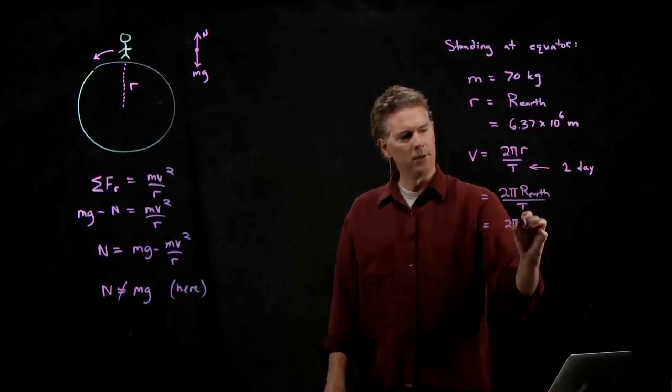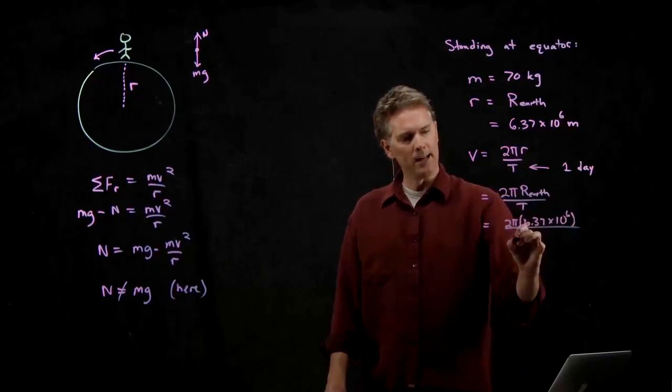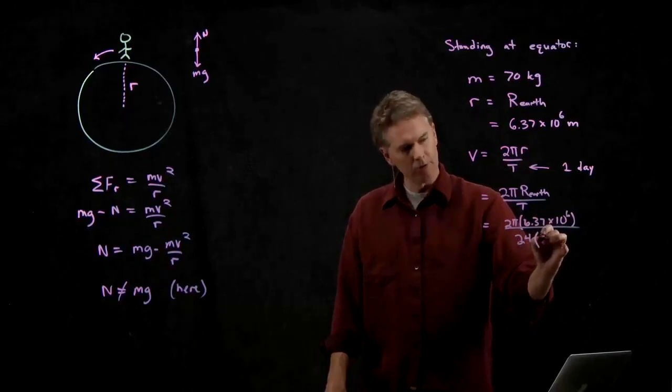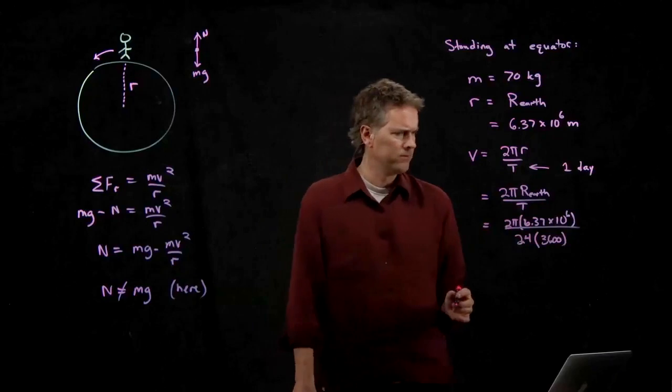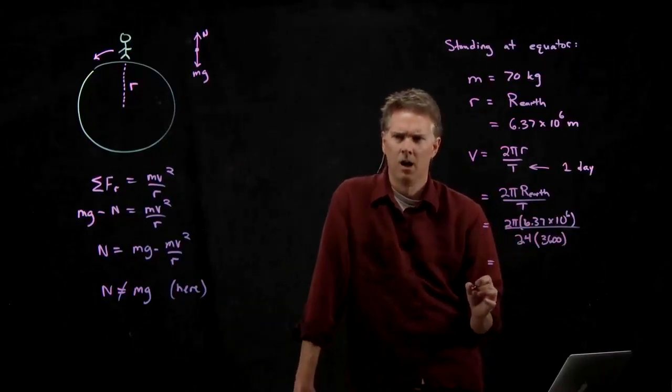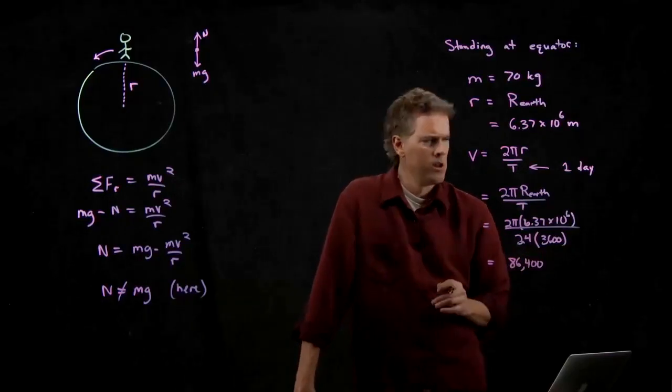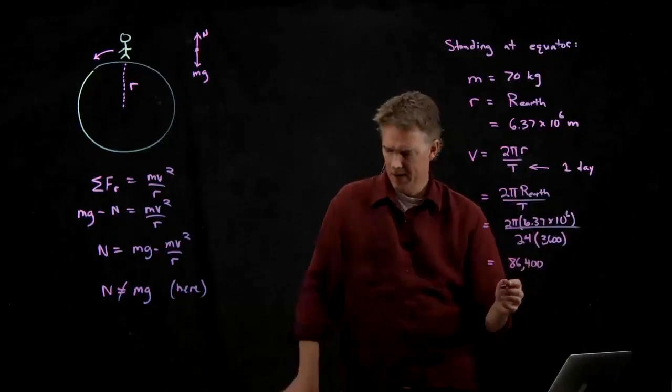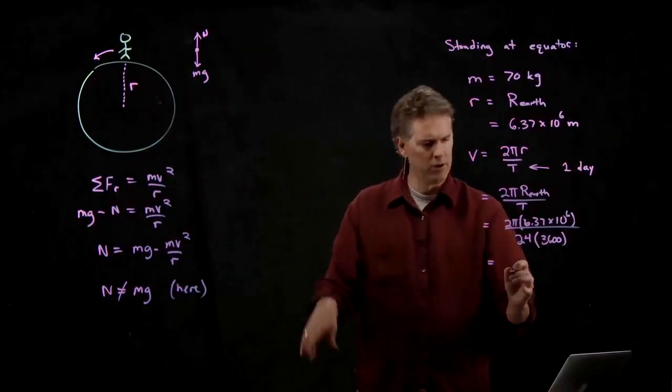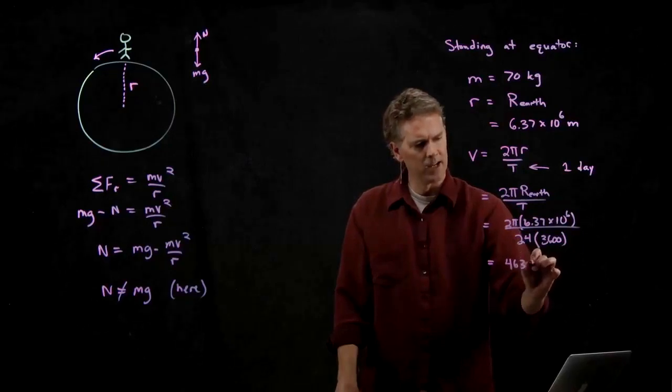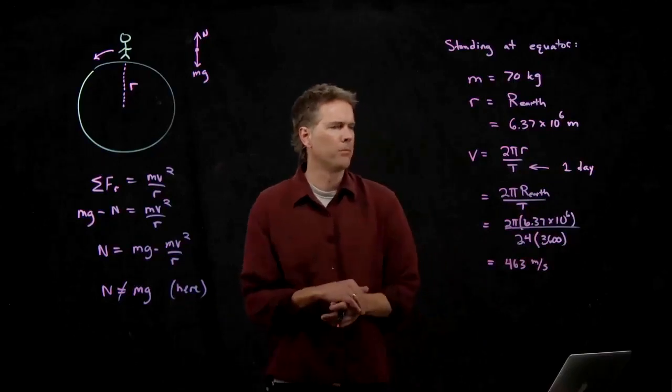And so we can punch in some numbers here. 2 pi. Radius of the Earth we just said was 6.37 times 10 to the 6 meters. One day is what? It's 24 hours times 3,600 seconds per hour. Somebody punch this into your calculator and tell me what you get. How much? 86,400. That's for T, right? Yeah. That was for T. What did you say? 463? 463 and it's SI unit, so we're in meters per second. Does that sound right? Yeah, that sounds right. Because we said that we're moving about 1,000 miles per hour. Double that, you get about 1,000 miles per hour.